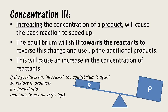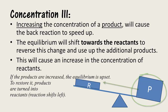To demonstrate this, let's use a seesaw model. If we increase the concentration of the products by putting a bigger mass on the product side of the seesaw, the equilibrium balance is upset. To restore balance, products get turned into reactants and the reaction shifts towards the left — the reactant side. This will bring the seesaw back to a balanced position and equilibrium is restored. But remember, the concentrations will be slightly different than before, though the equilibrium constant K will be the same.